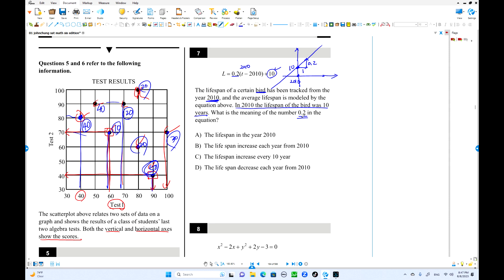What is the meaning of a number two? Number two is a slope. Slope is increased by x unit, one unit. There is increase in lifespan, that's the slope, 0.2. So lifespan increase each year from 2010. That's the slope. Each year is one unit to the right, one year. Lifespan 0.2 is increased. Choice B is the answer.